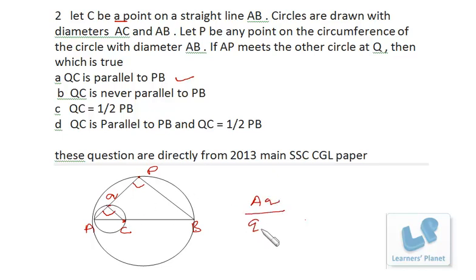AQ by QP will be equal to AC by CB will be equal to QC by PB. That is the concept of similar triangles. If QC is parallel to PB, then AQ by QP is equal to AC by CB is equal to QC by PB.